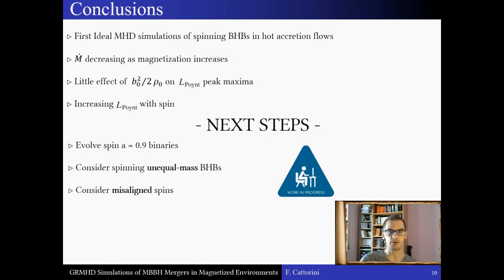So, in conclusion, I have presented some initial results of GRMHD simulations for massive black hole binaries in magnetized plasmas. For the first time, binaries of spinning black holes in hot accretion flow have been evolved in the ideal MHD paradigm. We have seen the effects of spin and magnetization on the accretion rates and the Poynting fluxes. We have found that the plasma's magnetization has a big suppressing effect on the mass accretion rates, depleting the gas in the magnetically dominated regions over and under the disk.